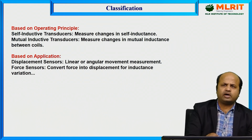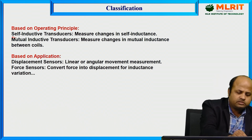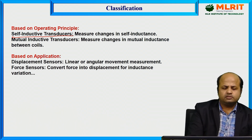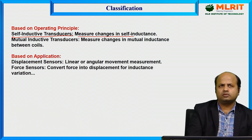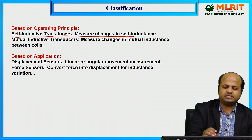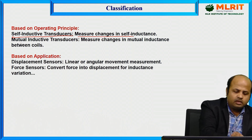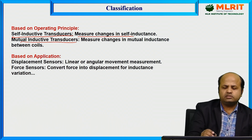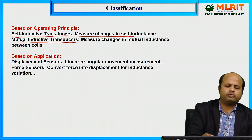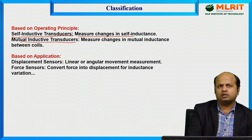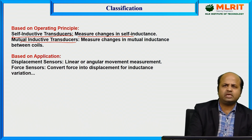Let us classify the inductive transducer. Based on operating principle, we have self-inductive transducer, which measures change in self-inductance, and mutual inductive transducer, where there will be change in the mutual inductance between the coils. For mutual inductive transducer we must have two coils, and for self-inductive transducer we need a single coil.